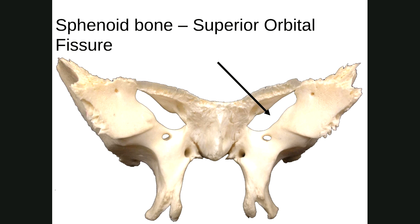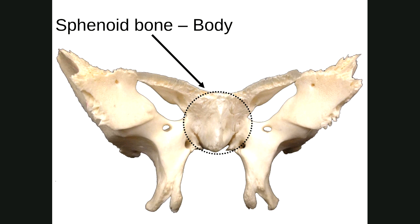On the anterior view, there are these slits — that's the superior orbital fissure. A fissure is like an elongated crack. In the center of the sphenoid bone, you also have the body of the sphenoid bone — you have to say that to distinguish it from the body of a vertebra.